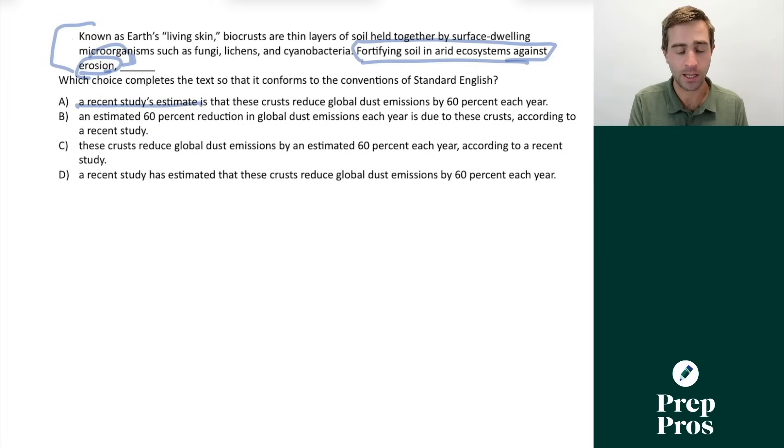A recent studies estimate can't be doing that. An estimated 60% in global dust emissions can't be doing that. But these crusts that we talked about in the prior sentence the biocrust could be fortifying the soil and arid ecosystems against erosion. And a recent study once again would not be described by that. So that's why this is called a misplaced modifier because all the wrong answer choices are going to make that modifier describe the wrong thing here.